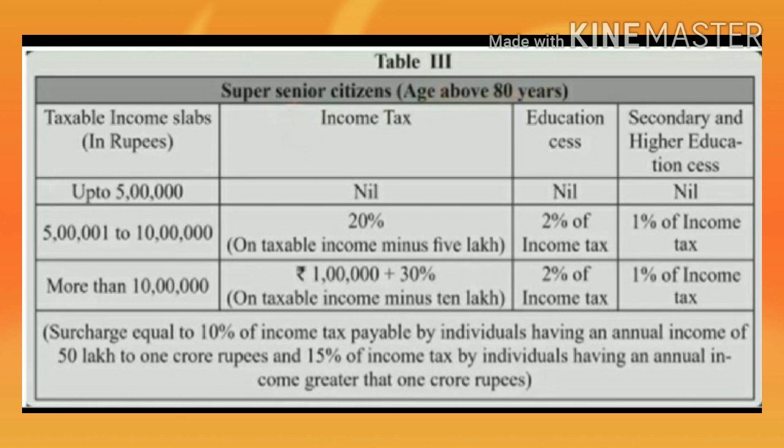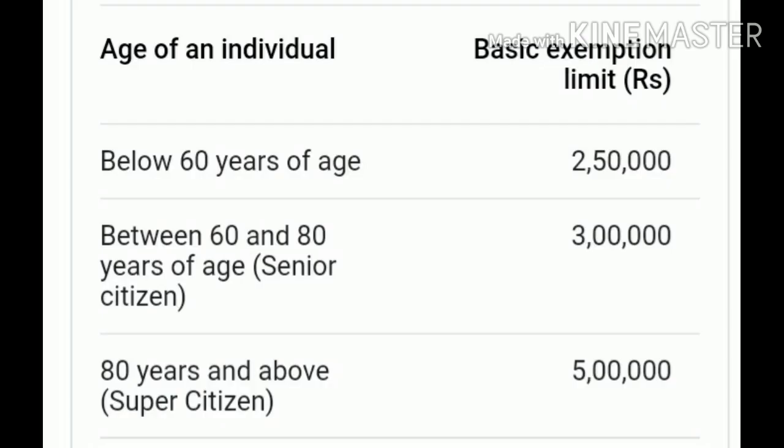The third table is for super senior citizens whose age is above 80 years. For this age group the exemption is five lakhs only. To summarize basic exemptions: below 60 years of age — two lakh fifty thousand exemption; between 60 and 80 — three lakh exemption; 80 years and above — five lakh exemption.